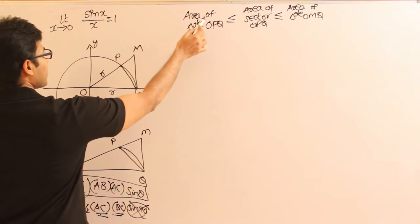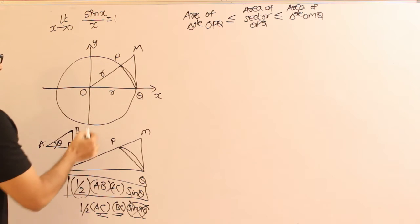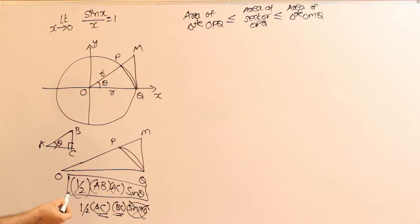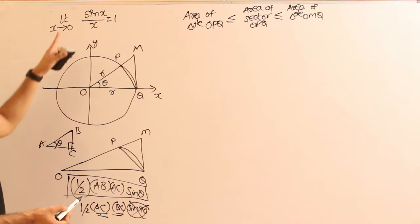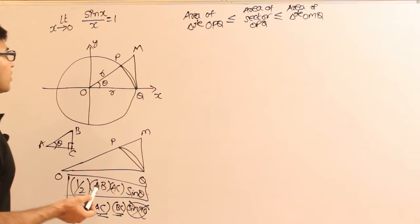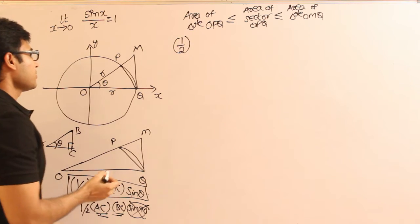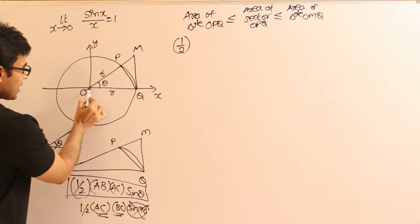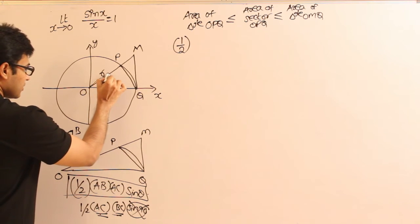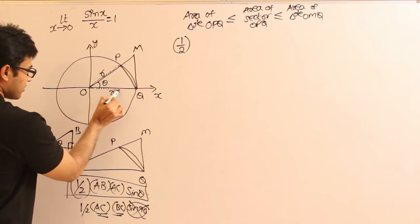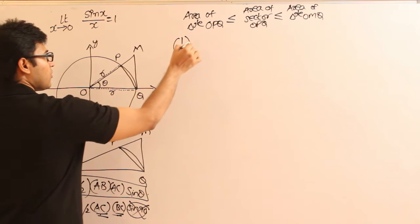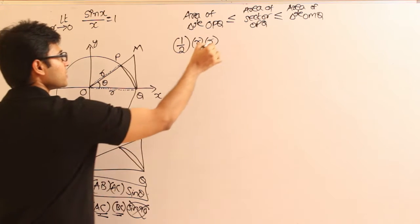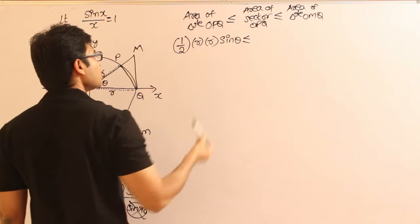I want to find the area of triangle OPQ. Assume the angle at O is theta. The two sides from O are both radii of length R. So the area of triangle OPQ is half times R times R times sine theta, which gives half R squared sine theta. This is less than or equal to the area of sector OPQ.